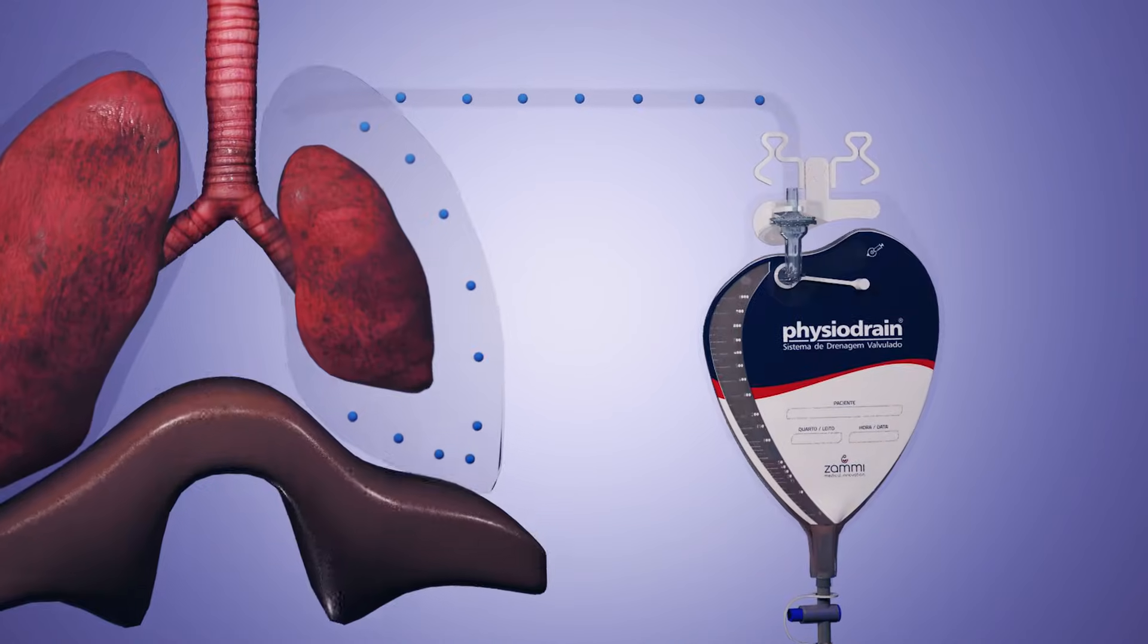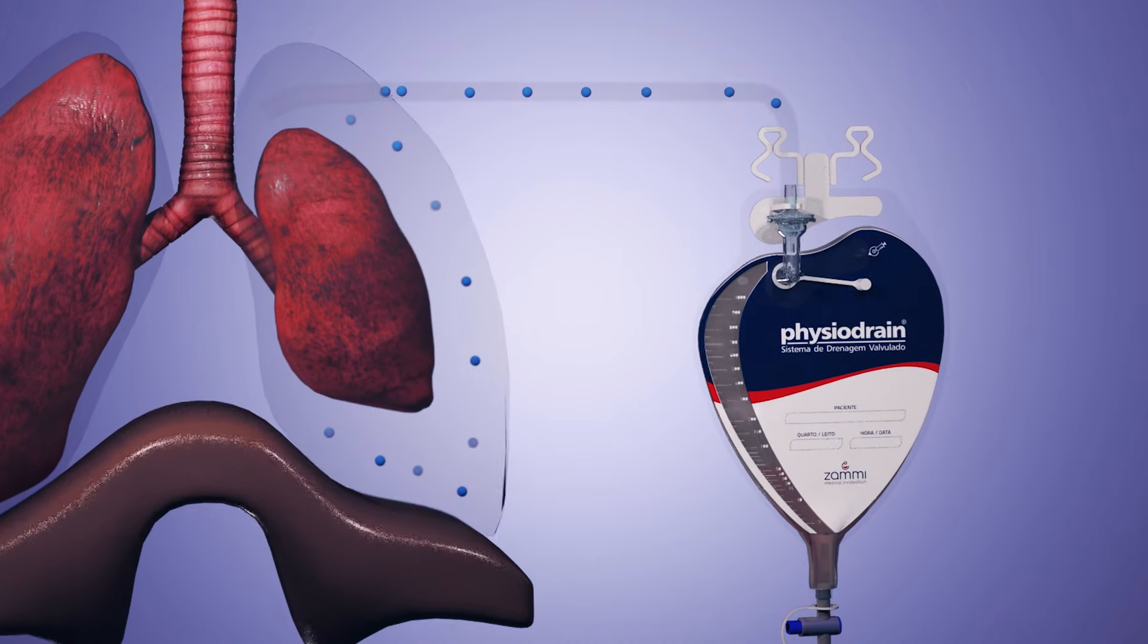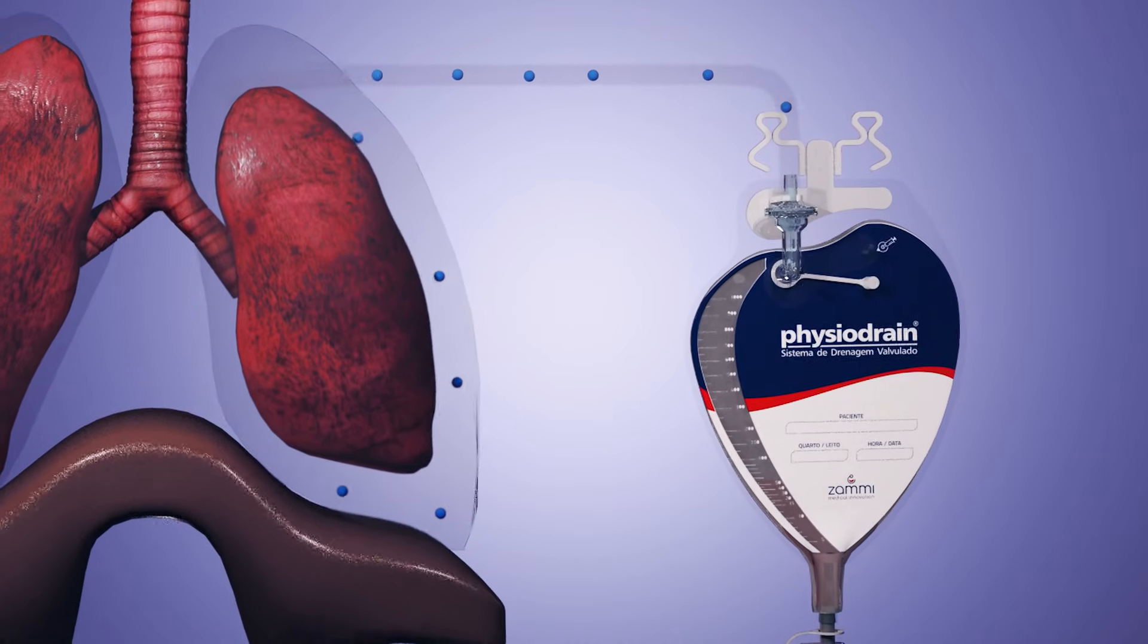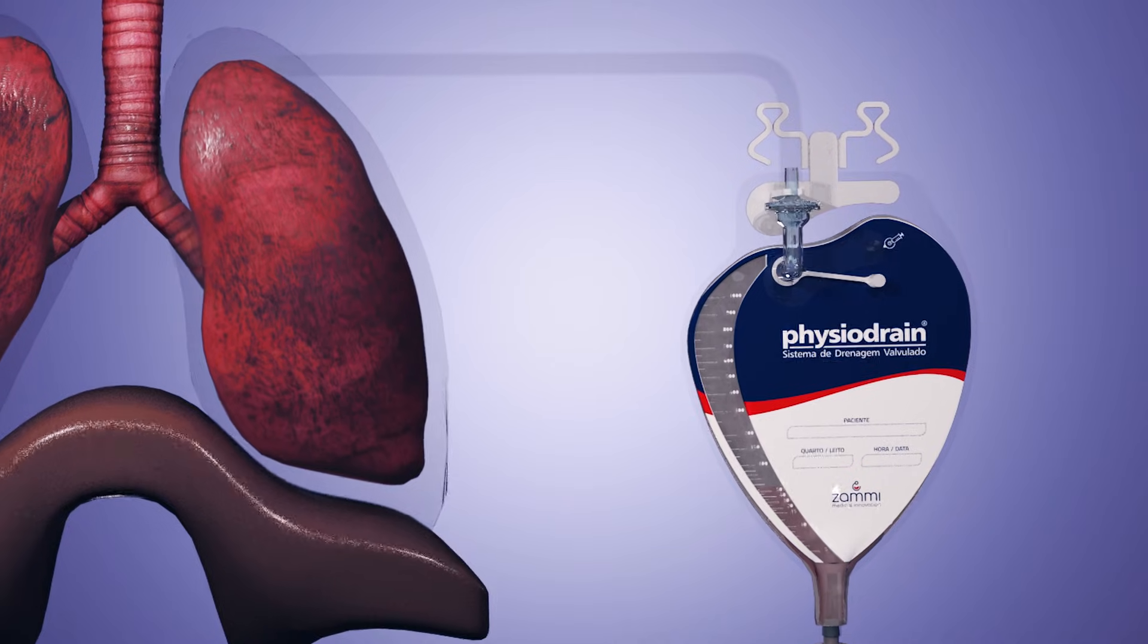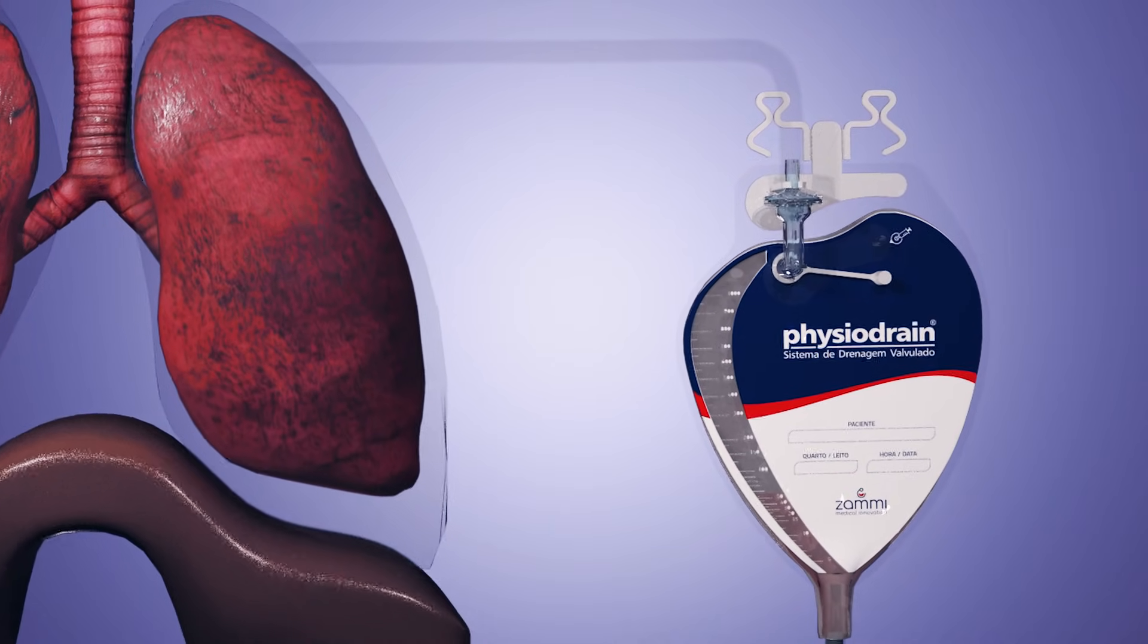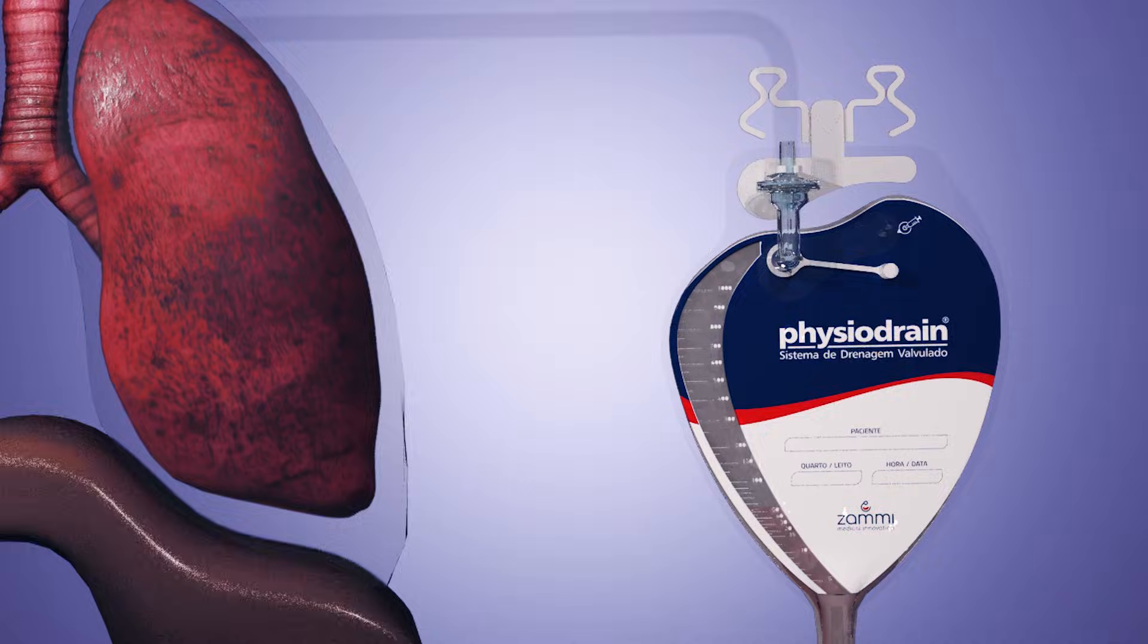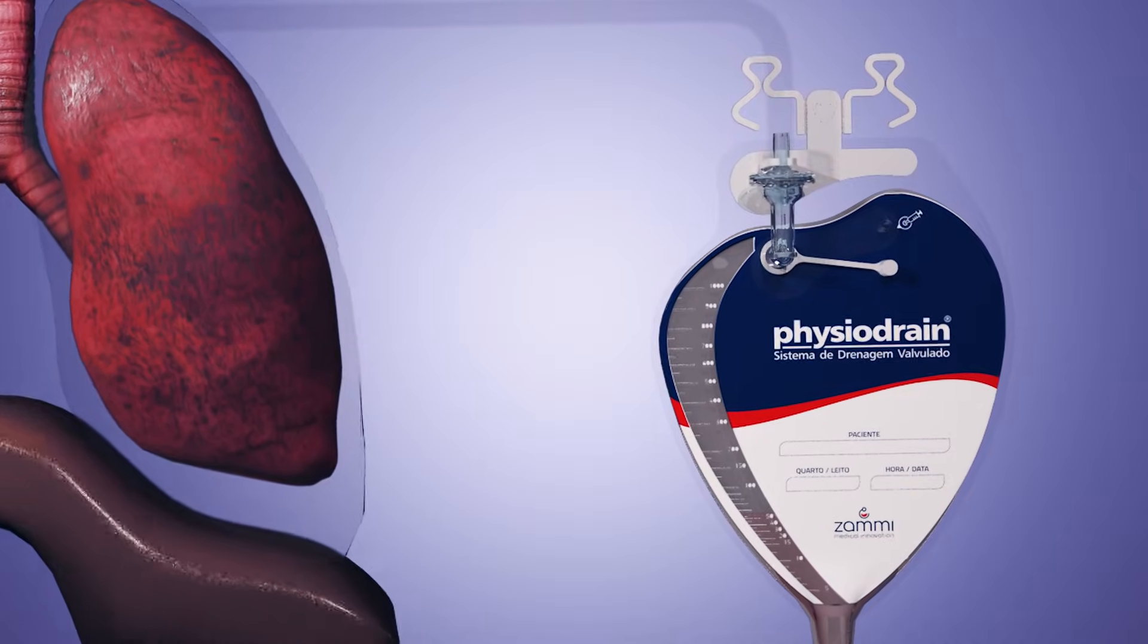The physiodrain system has an opening pressure very near to zero and there is no backflow. Any upward movement of the diaphragm provokes drainage and any downward movement expands the lung. Drainage is faster and more efficient, allowing full lung expansion in less time.